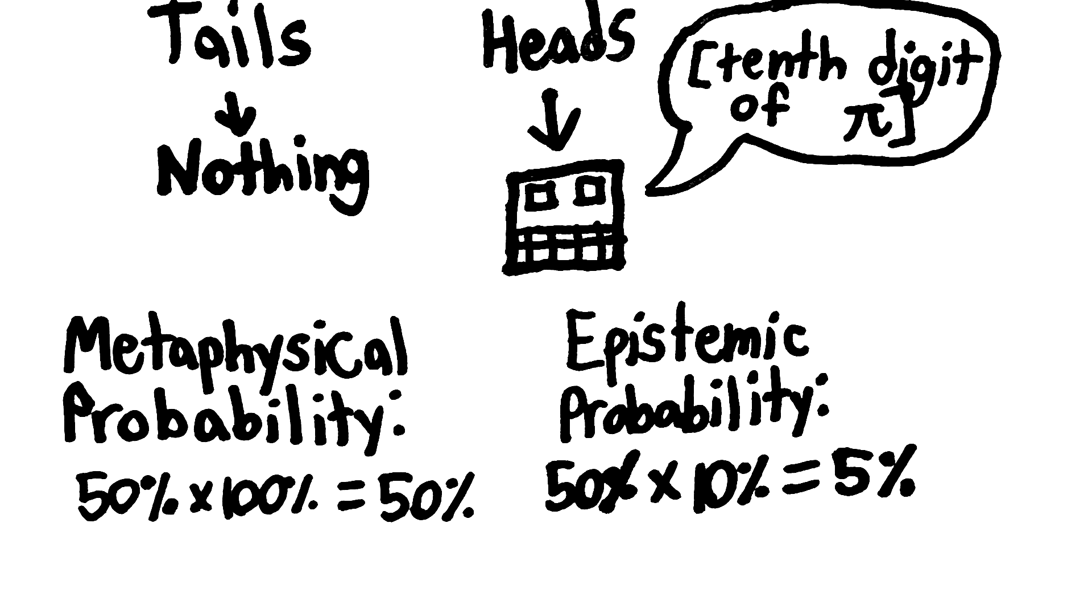Sorry if that was hard to follow. I just wanted an example that shows the interaction of metaphysical probability and epistemic probability.